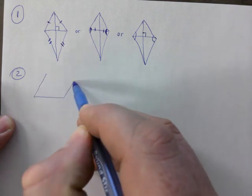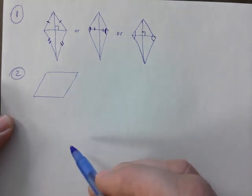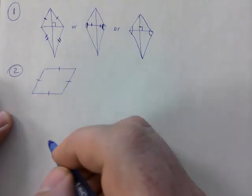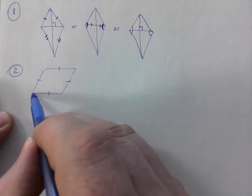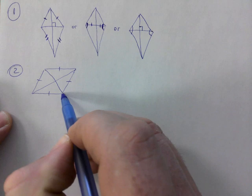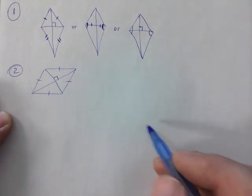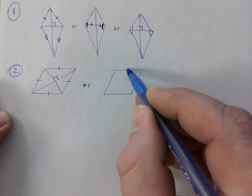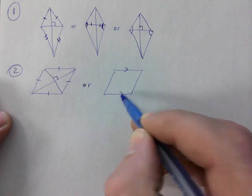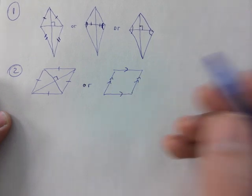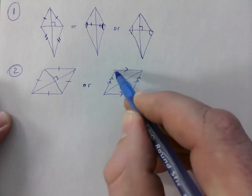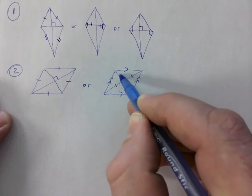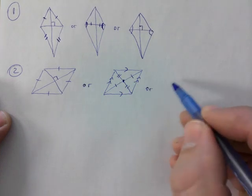Question two is asking for a rhombus — a rhombus is basically a slanted square. One property: all sides are the same. Another property: the diagonals meet at 90°. You might want to say these two sides are parallel and these two are parallel — that would be one property. And then indicating that they bisect — one-one, two-two — that would also be acceptable.